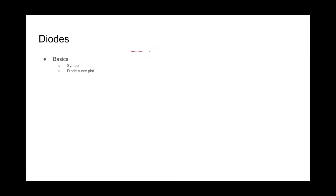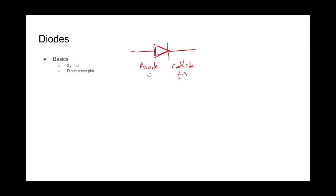Now that we've done our fluids example, let's talk about the symbol and what it means electrically. This is a symbol for a diode. We have the anode on the left here, which kind of looks like a giant letter A. Then we have the cathode on this side. I like to think of the cathode like the minus side — there's a big minus sign right there. So the anode is our positive side and the cathode is our negative side.